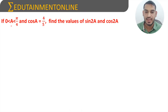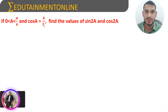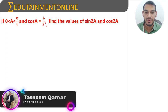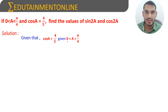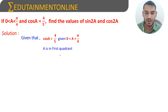If 0 is less than A is less than π/4 and cos A equals 4/5, find the values of sin 2A and cos 2A. Given that cos A equals 4/5 and 0 < A < π/4, it means A is between 0 and 45 degrees. Therefore, A is in the first quadrant.